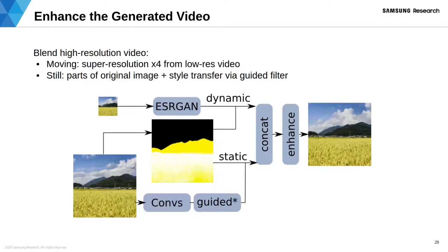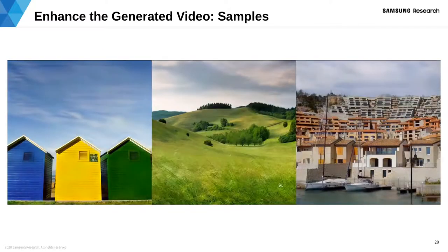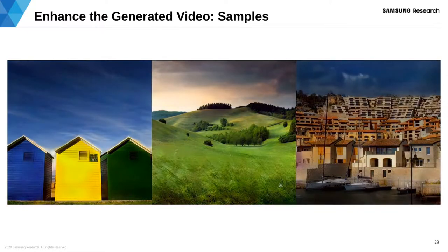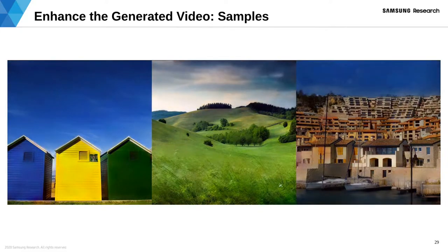Our generator is trained to produce images up to 512 resolution. Input images often have higher resolution. We train a separate enhancement network which fuses motion from the generated video and fine details from the high-resolution input image. To upsample the video, we train an ESRGAN architecture. During training, ESRGAN takes as input images after our encoding algorithm, effectively learning not only to upsample but also to alleviate artifacts.